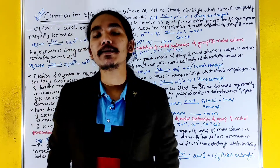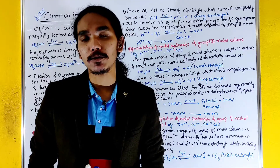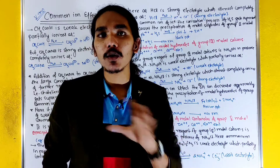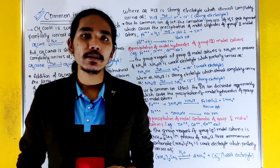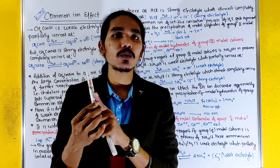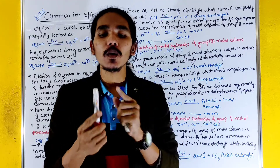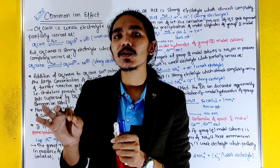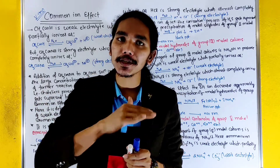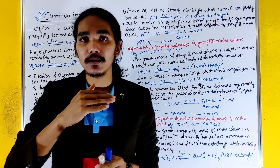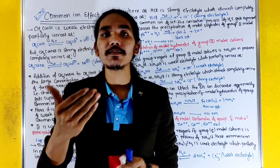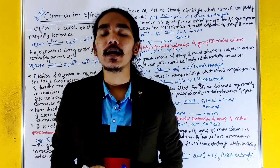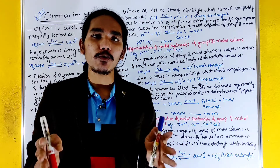The common ion effect of HCl means that from a weak electrolyte, the ionization is suppressed — that means it decreases. If the extent of ionization of a weak electrolyte is decreased due to the addition of a common ion, it will be called the common ion effect.